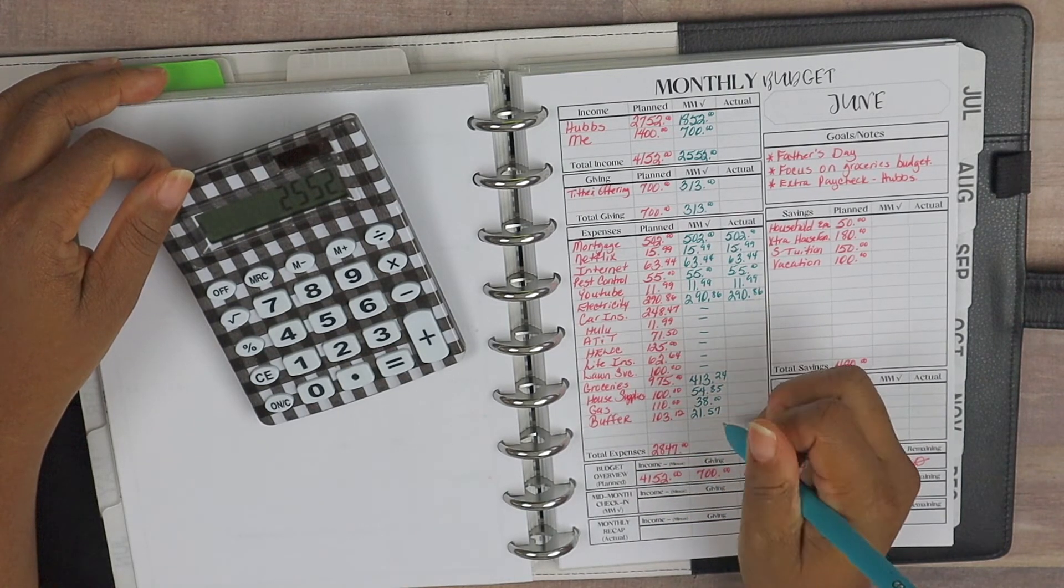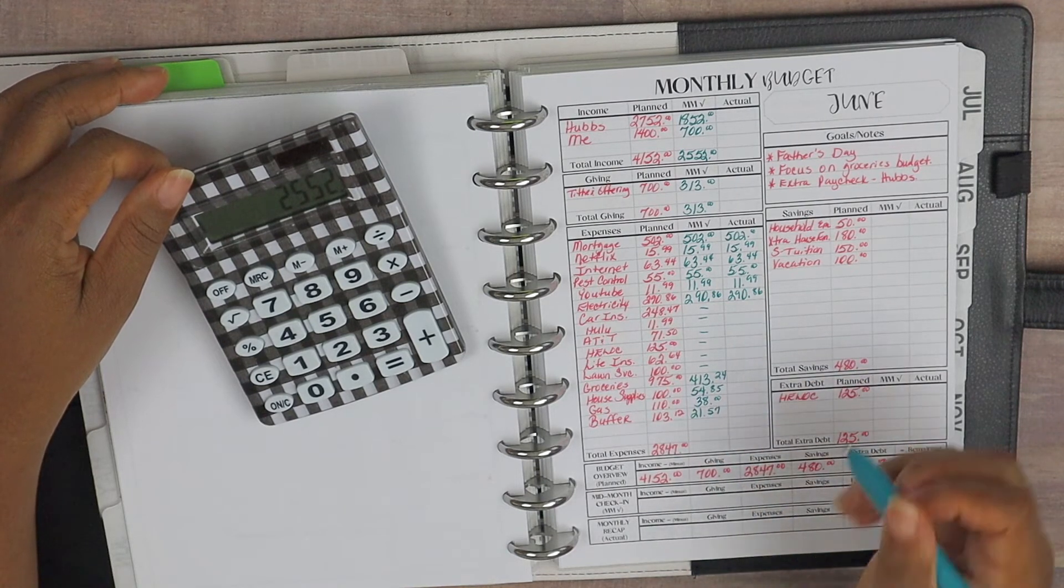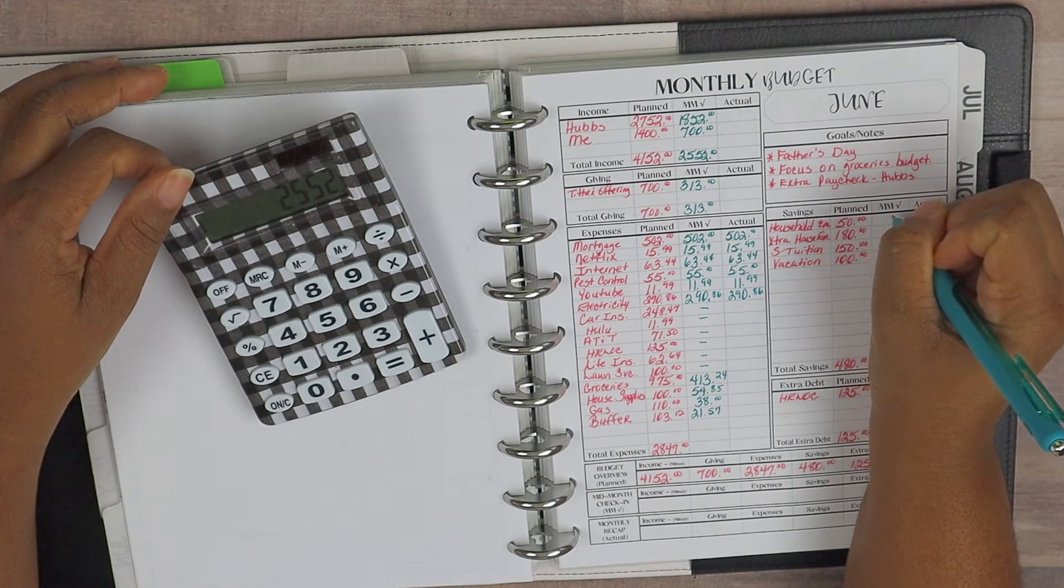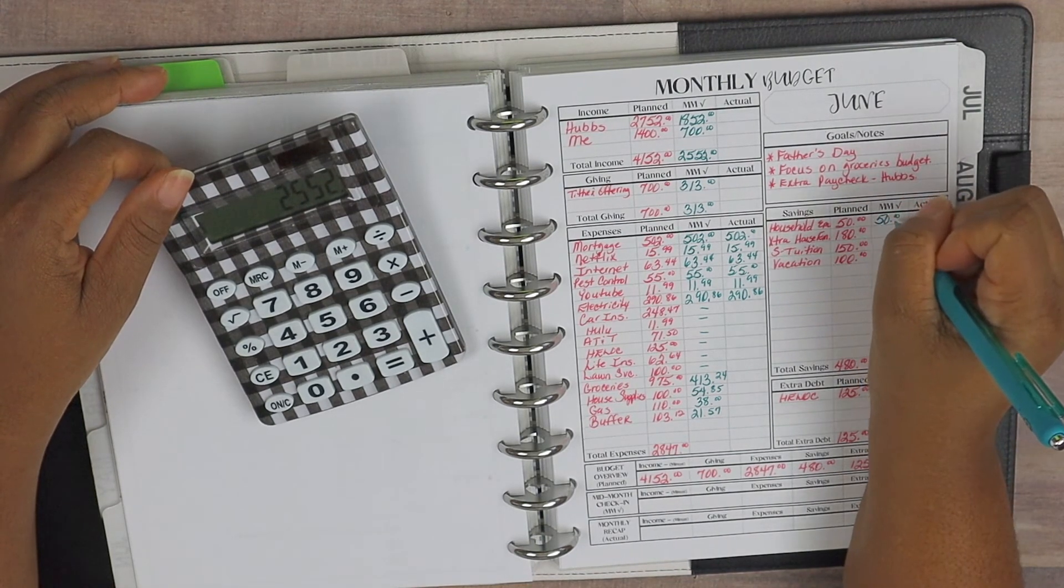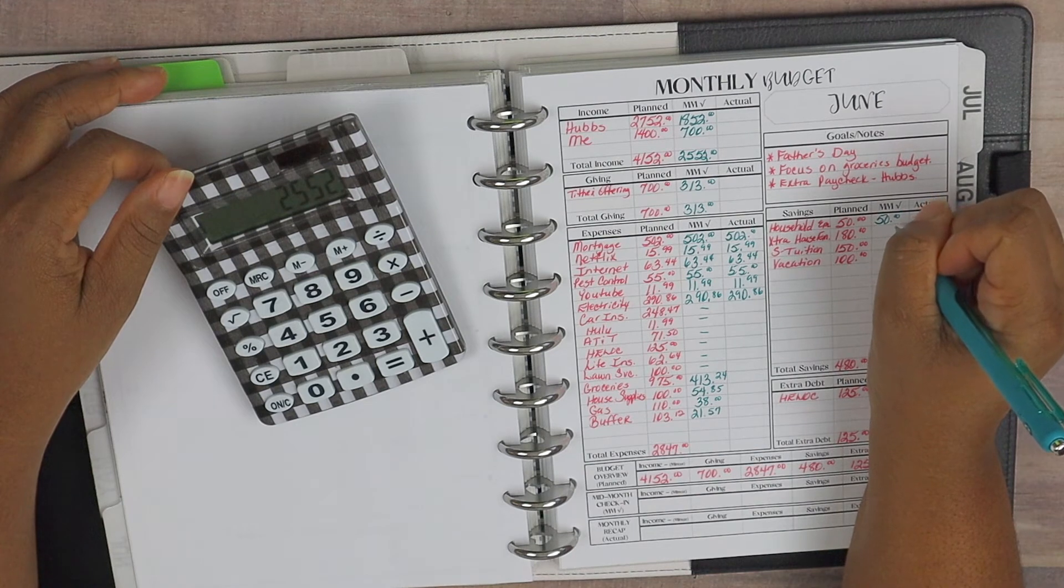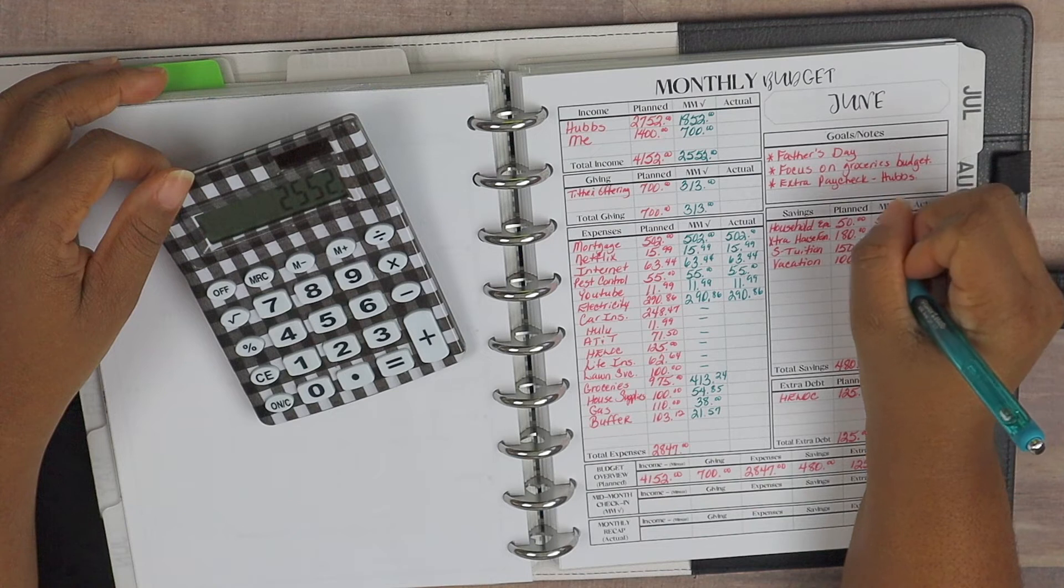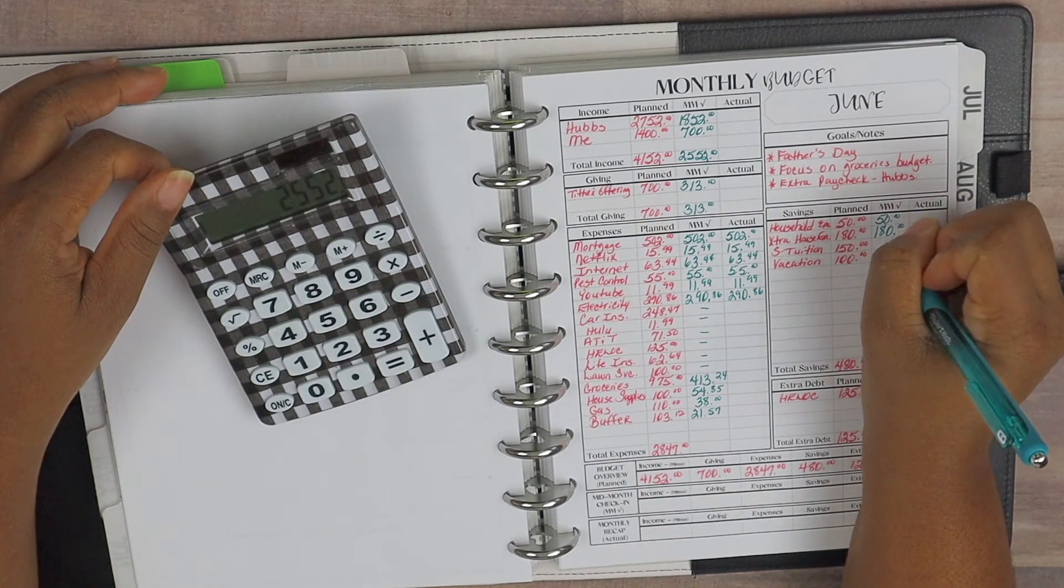And then for our household emergency, that $50, we have set that aside. So it does automatically come out at the end of the month, so that $50 is there. And the extra household emergency, $180, that has already been taken care of.